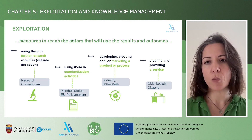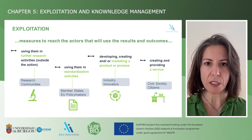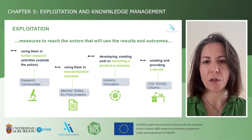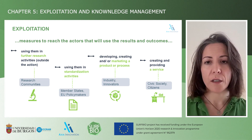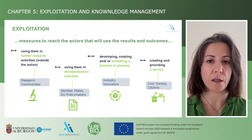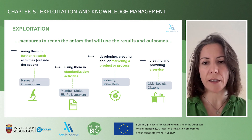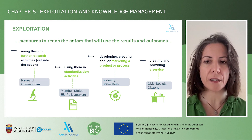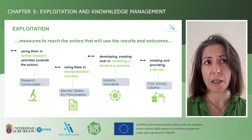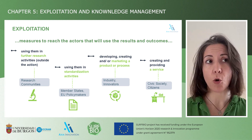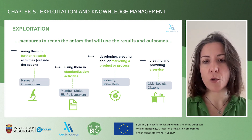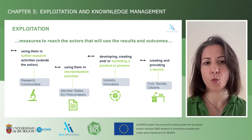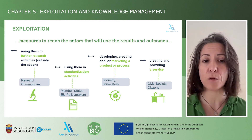So who is the target audience? Here we can see some actors that could benefit from using these results. First, research communities — research created within a project could be used for further research. Second, member states and policymakers — for example, if we have developed a standardization or policy roadmap. We can also target industry and innovators if we are developing a product or process with commercial intentions, or we could be creating a service that benefits society or citizens. Depending on the type of results, we will target a specific audience, and this identification is part of the exploitation plan.